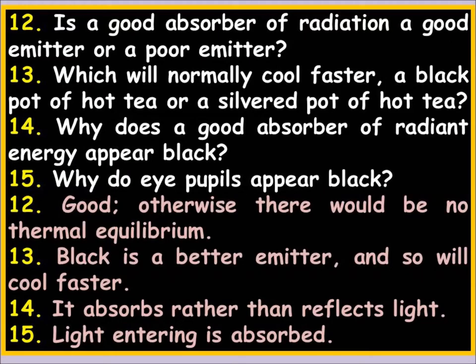Is a good absorber of radiation a good emitter or a poor emitter? The rule is: good absorber, good emitter; poor absorber, poor emitter — otherwise there would be no thermal equilibrium. Which cools faster: a black pot of hot tea or a silver pot? Black is a better emitter, so it cools faster. Silver is a good reflector, meaning poor emitter. Bad reflector means good emitter.